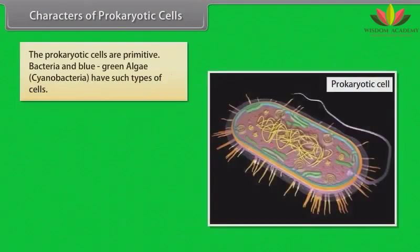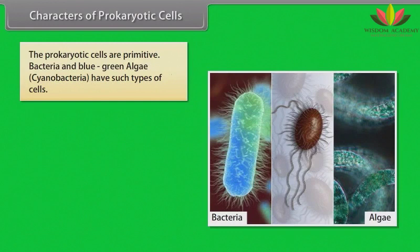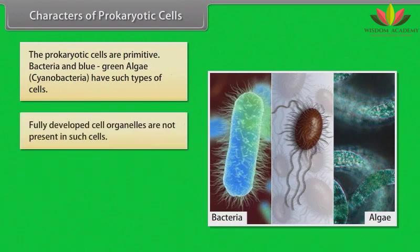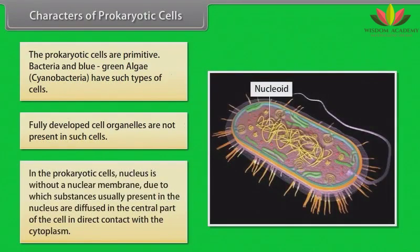The prokaryotic cells are primitive. Bacteria and blue-green algae, that is cyanobacteria, have such types of cells. Fully developed cell organelles are not present in such cells. In prokaryotic cells, the nucleus is without a nuclear membrane, due to which substances usually present in the nucleus are diffused in the central part of the cell, in direct contact with the cytoplasm.